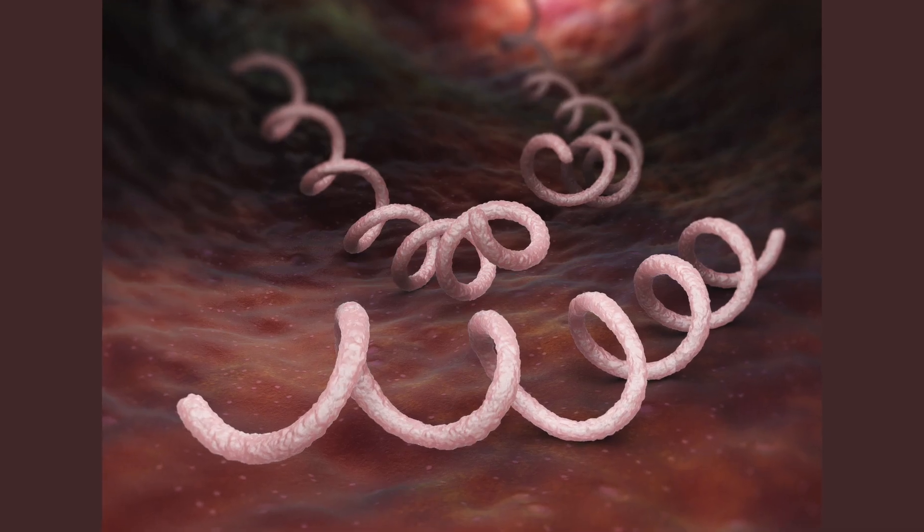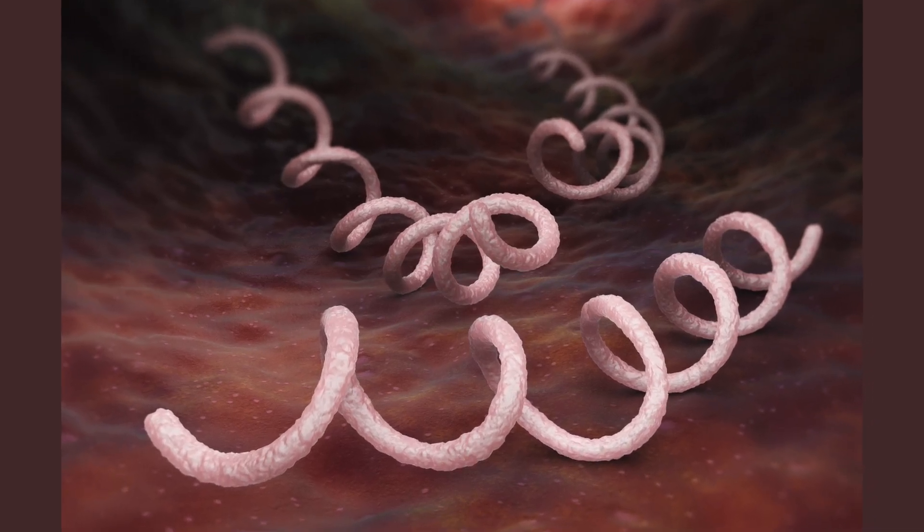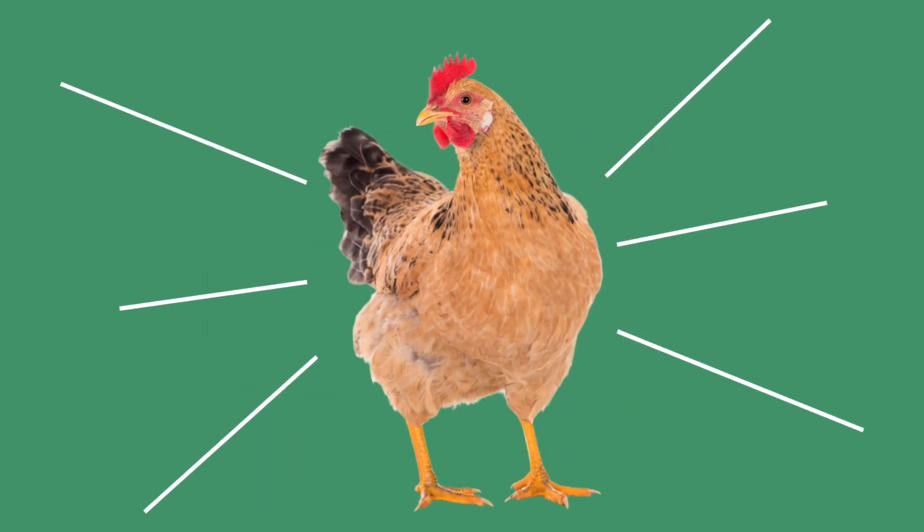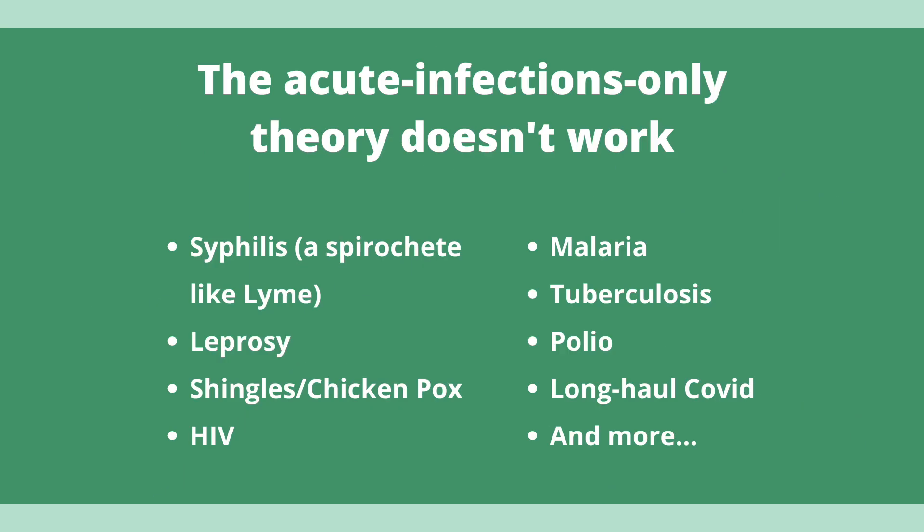And we get to things like, well, if a doctor knows a lot about syphilis, syphilis is a spirochete like Lyme. This confused doctors because it has these phases of being active and dormant. That was very confusing as we looked at it. Leprosy is a slow growing bacteria, shingles and chicken pox. Another example that goes chronic. HIV is chronic. Malaria can be chronic. Tuberculosis is chronic. Polio is chronic.